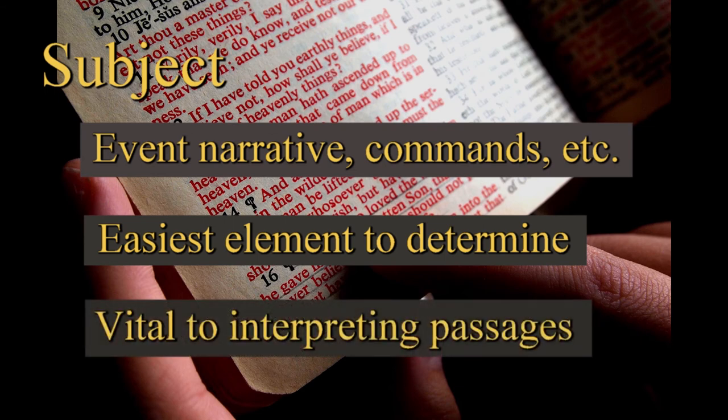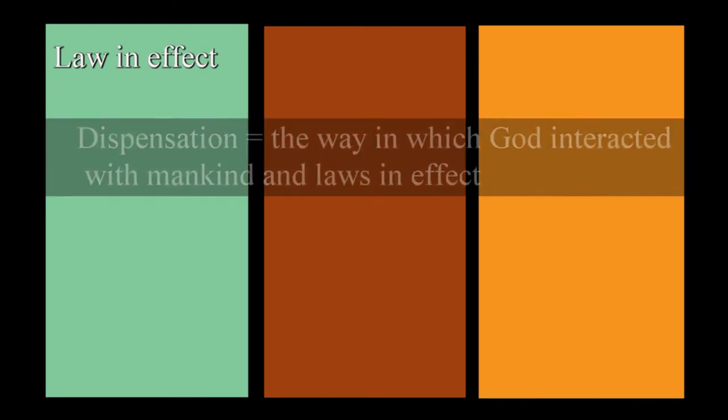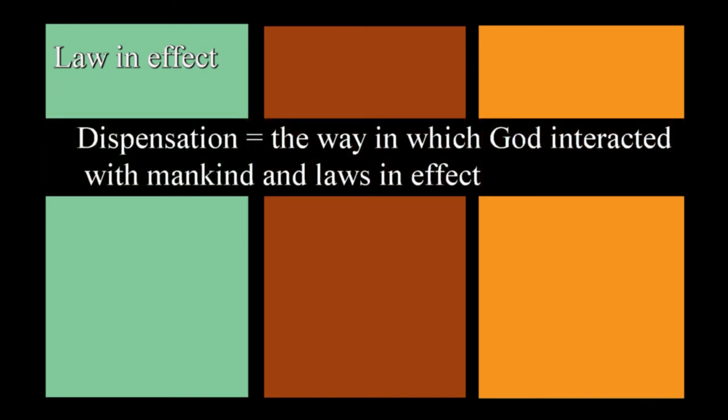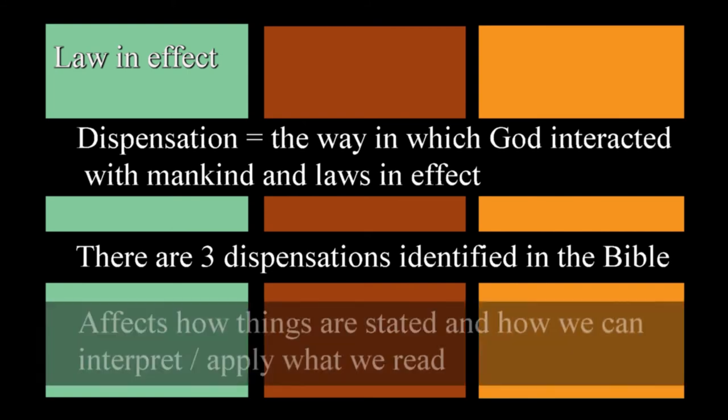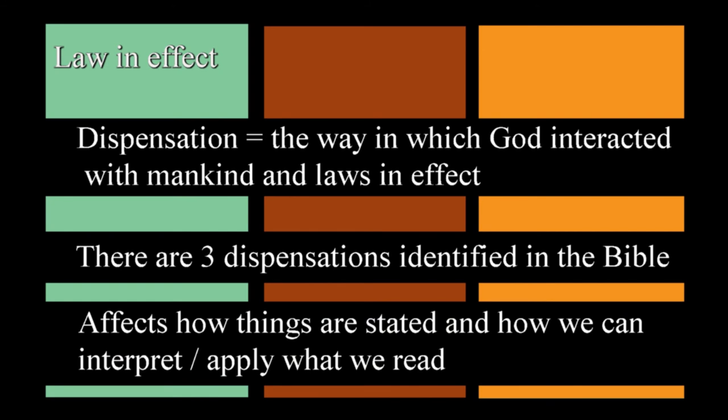In a later video, we'll talk about the dispensations recorded in the Bible. A dispensation marks the way in which God interacted with humanity. There are three of these listed in the Bible, and each has distinct characteristics. To fully comprehend any passage, we have to understand what dispensation or law of God is enforced at a particular time. This will have much to do with how things are stated and the ways we can interpret and apply what we've learned.